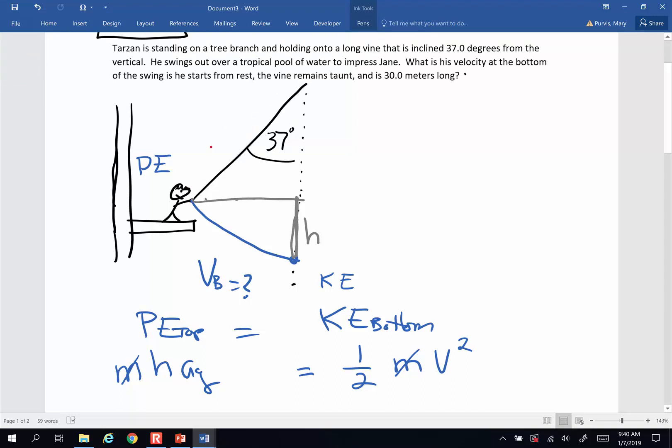The length of the vine is 30 meters. So this vine is 30 meters long, and we're told in the problem when he swings out, the vine remains taut. So if that's 30 meters, from here to here is also 30 meters. We're making the assumption the vine is not going to stretch or anything from the weight of Tarzan. So those are the same two lengths.